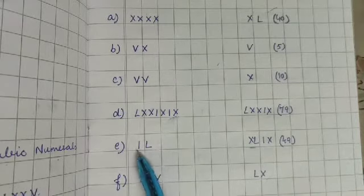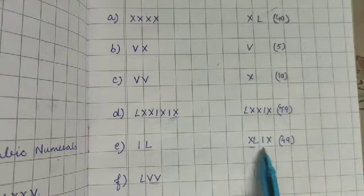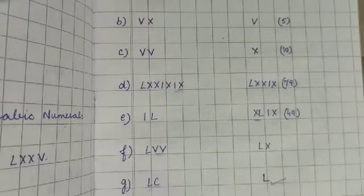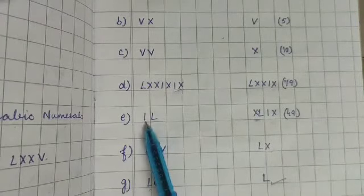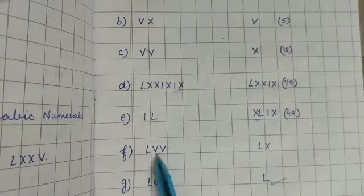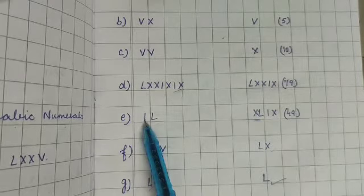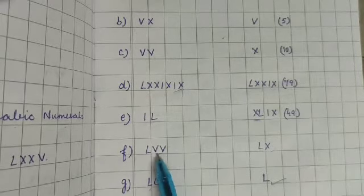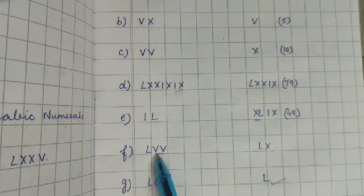Here, 50 minus 1 is 49. So this is a correct symbol. How to write 49? Because this symbol cannot be repeated. We cannot repeat, this symbol cannot be subtracted, so it cannot be repeated. So instead of this they want to write...